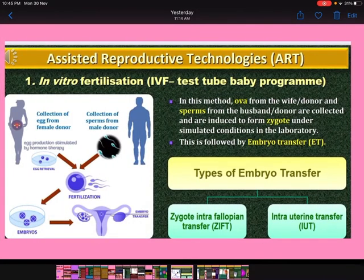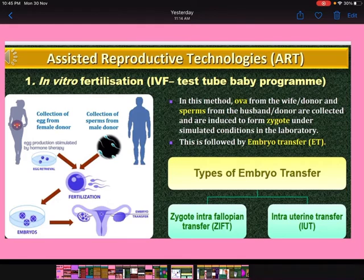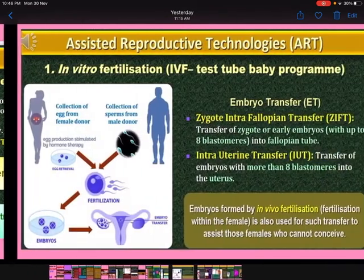In vitro fertilization, or the test tube baby program: in this method, ova from the wife or donor and sperm from the husband or donor are collected and induced to form a zygote under simulated conditions in the laboratory. Fertilization is done in the laboratory — that is why it is called test tube baby. This is followed by embryo transfer. There are two types of embryo transfer: first, zygote intra-fallopian transfer or ZIFT; second, intra-uterine transfer or IUT.